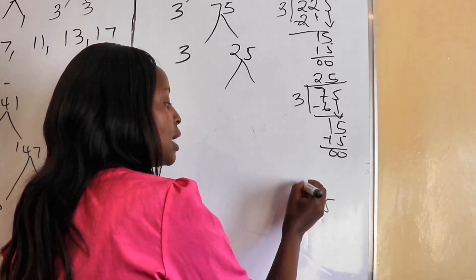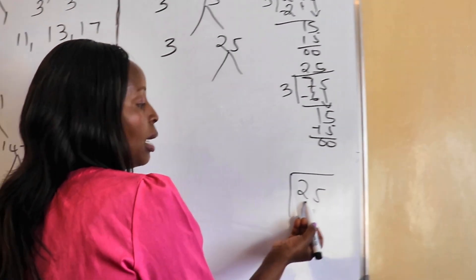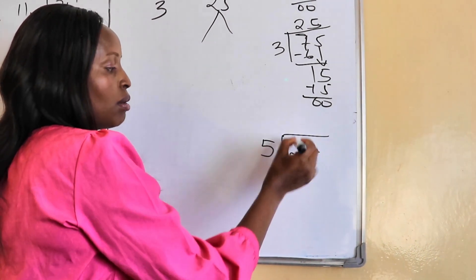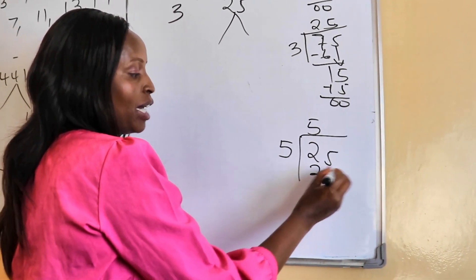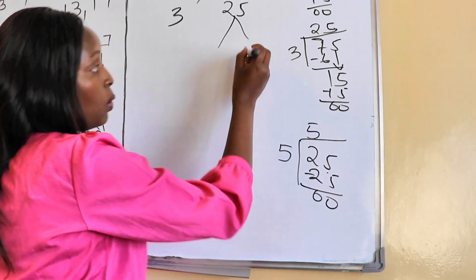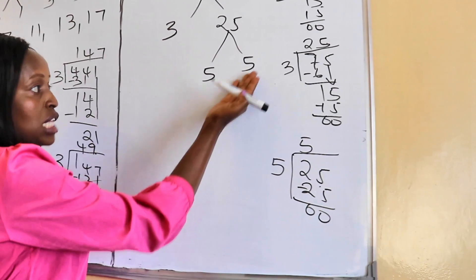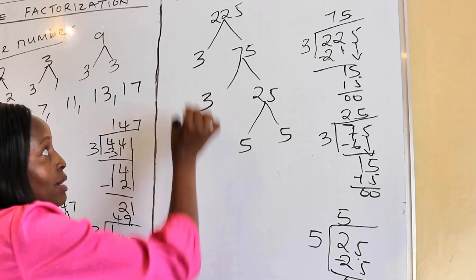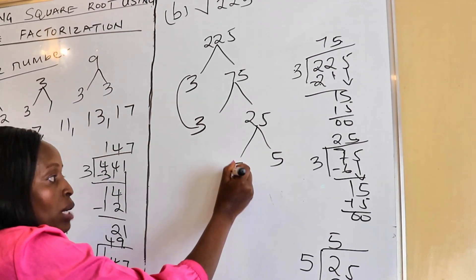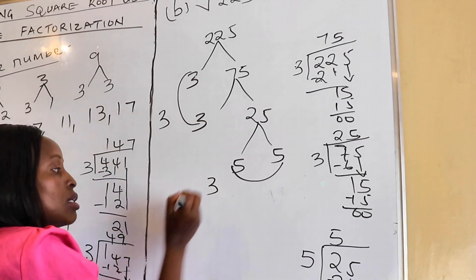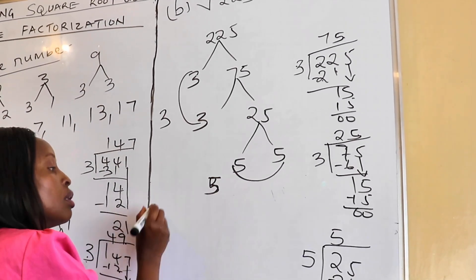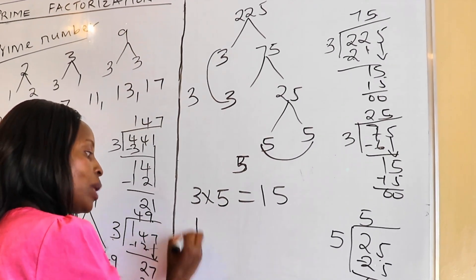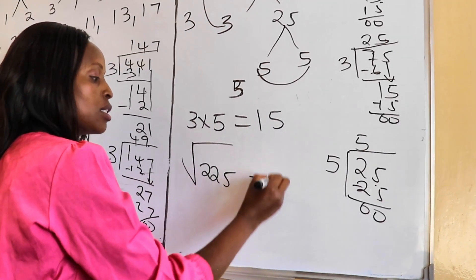We cannot divide 25 by 3. Since it ends with a five, we divide by five — five times five is 25, take away gives zero. Our quotient is five and our divisor is five. Since we have reached prime numbers at the bottom, we stop. We pair the two threes and the two fives, pick one from each — three times five equals 15. Therefore, the square root of 225 is 15.